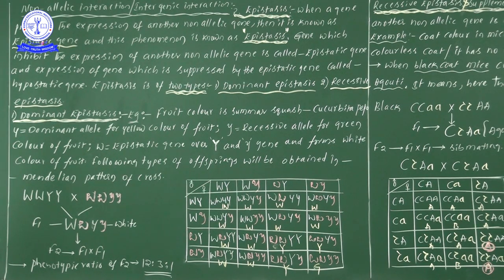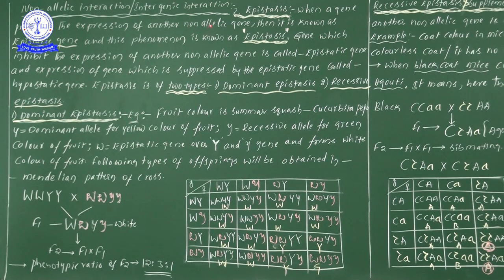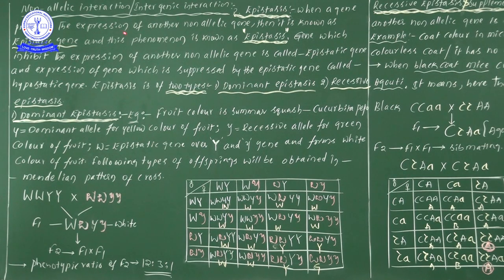Epistasis: when a gene prevents the expression of another non-allelic gene, it is known as an epistatic gene. So one gene suppresses or prevents the expression of another gene — that particular phenomenon we consider as epistasis.